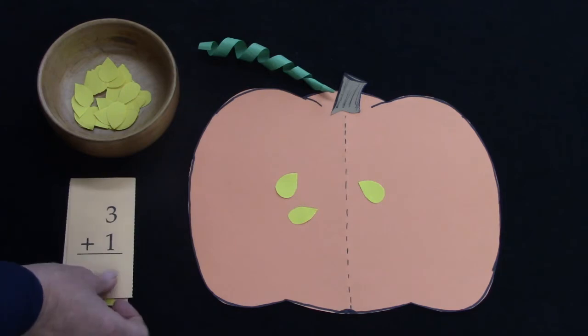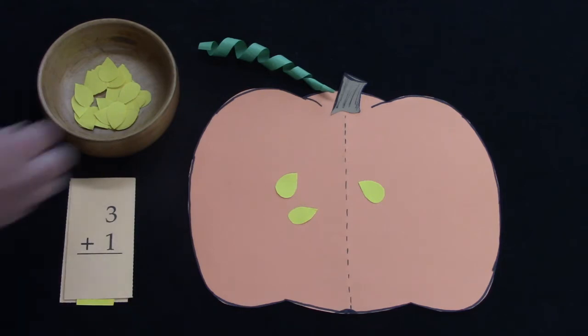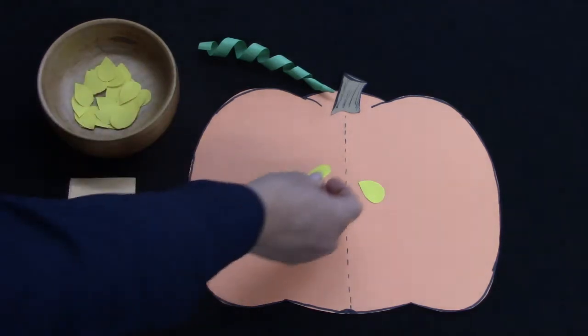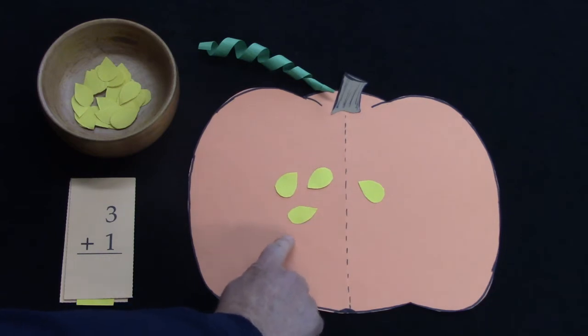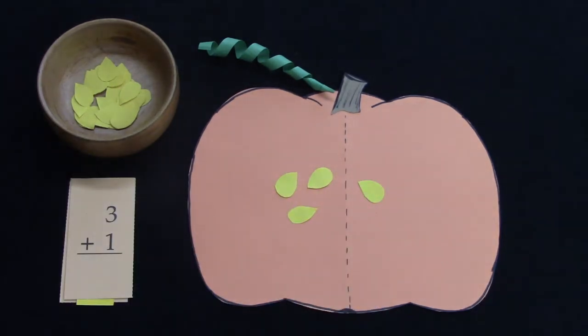What about three plus one? I'm going to put another pumpkin seed over here, so I have three plus one more, and I'm just going to count on. Three, four. Three plus one is four.